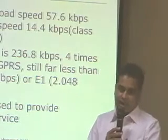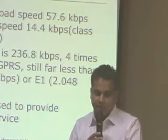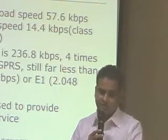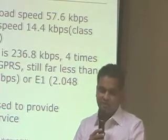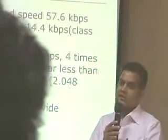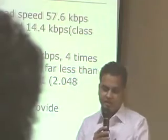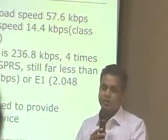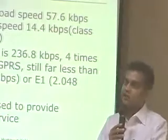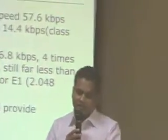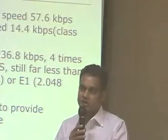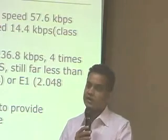If you look at the EDGE model, it has 236.8 kbps speed, and it's 4 times better than GPRS, but still it is less than T1 or E1 connectivity. T1 connectivity has 1.54 Mbps, or E1 connectivity has 2.048 Mbps. This is virtually required for any kind of service that we want to give. Even if you want to give video or other things, then T1 or E1 connectivity is not enough.